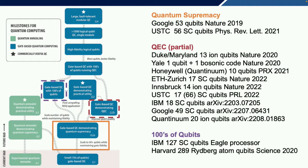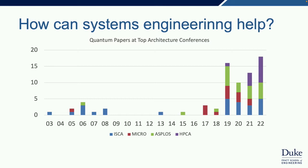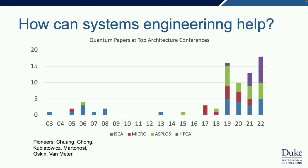Where can engineers come in? I gave a keynote at ISCA, so I'm thinking of computer architecture references. Quantum computing effectively starts in 1994 with Shor's algorithm. Ten years later, there were a few papers in top architecture conferences, led by pioneers like Chong, Fred Chong, John Kubiatowicz, Margaret Martonosi, Mark Oskin at University of Washington, and Rod Van Meter. Then there is a huge gap—what I call the first quantum winter.